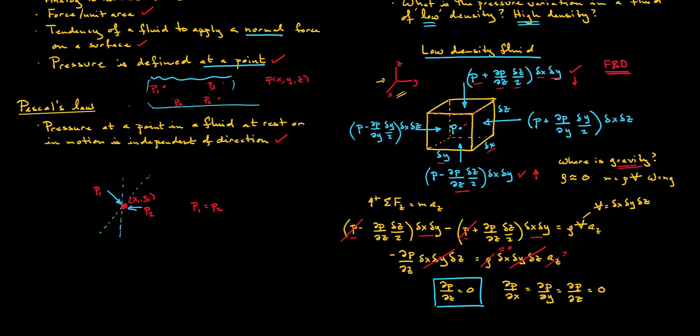So what this means is that if we have a closed container filled with some gas — say air — we can say that the container as a whole has an internal pressure p. The pressure at point p1 will be the same as the pressure at p2, p3, p4. For a low density fluid such as a gas at rest, we can assume that the pressure is constant throughout.